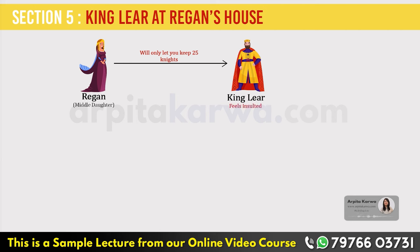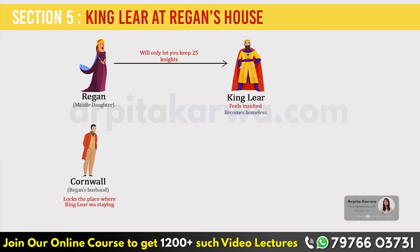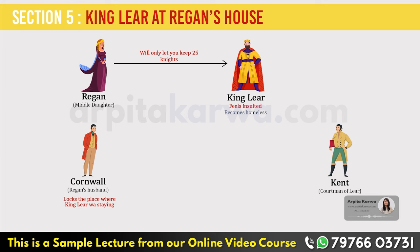On the other hand, Cornwall, Regan's husband, locks the place where King Lear was staying, which finally makes him homeless. Regan not just insulted King Lear but also made him homeless. When all this happened, Kent was not with him; however, he starts searching for King Lear.